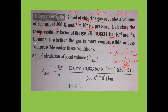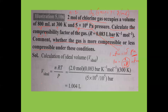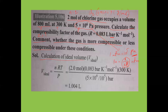We need to comment whether the gas is more compressible or less compressible. A gas is more compressible if it shows more negative deviation (Z much less than 1). If Z is closer to 1 but still less than 1, the gas is less compressible. First, we calculate Z.